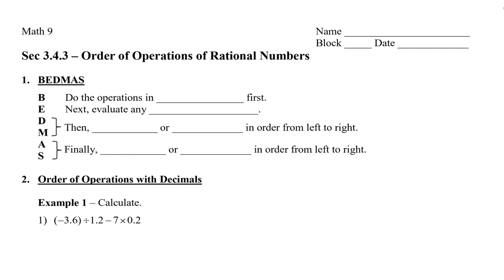The B in BEDMAS stands for brackets, and that's the first thing that we're going to do. We're not looking at brackets that surround a single number, but brackets that actually surround an operation inside. Next, we have E, which stands for exponents — you want to evaluate the exponents, which means to calculate the value of any numbers with exponents on them.